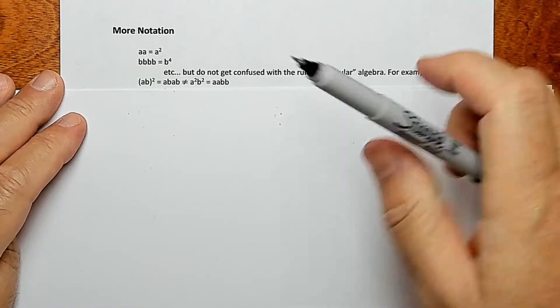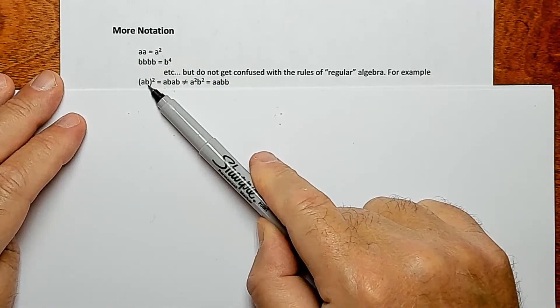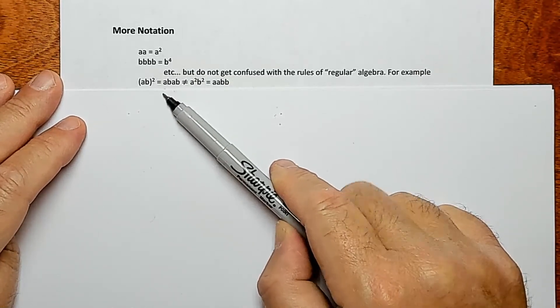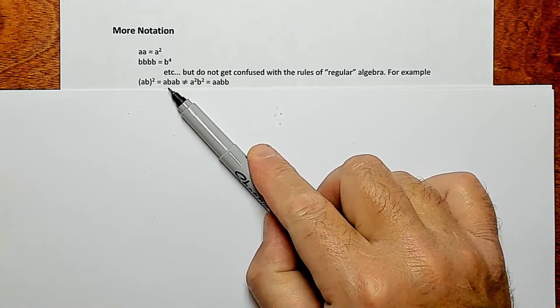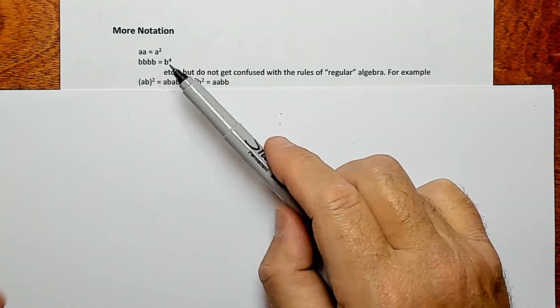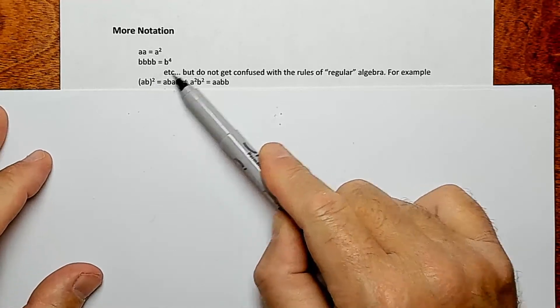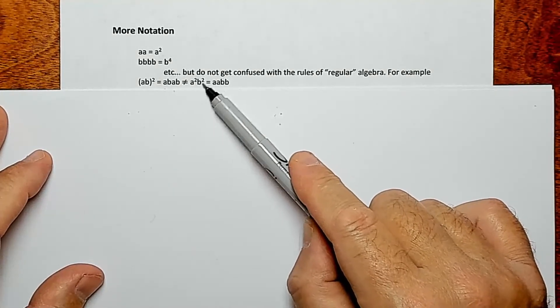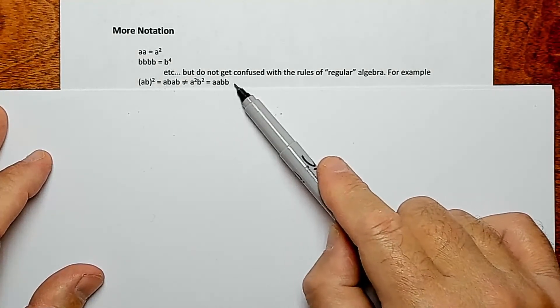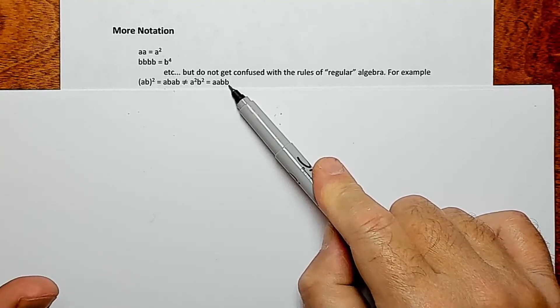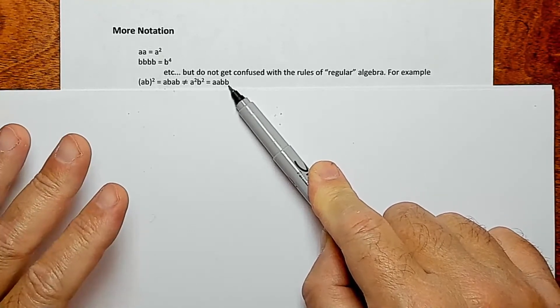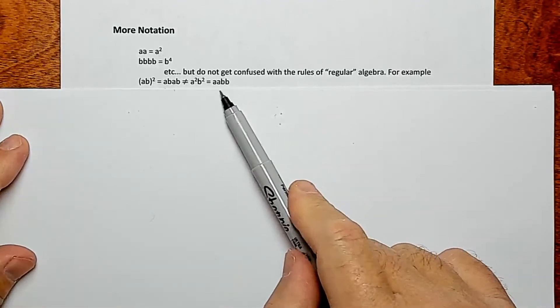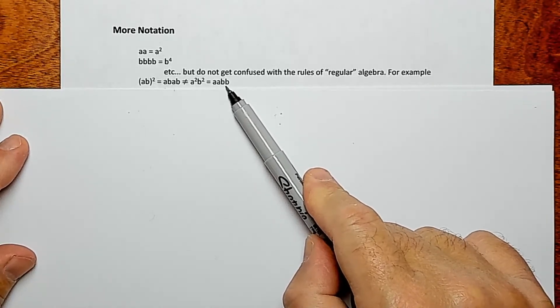But careful because when you do (AB)^2, what that really means is ABAB. But you've got to be careful because in regular algebra, you can factor in the two, right? And get this A^2 B^2. But that's not the same thing in this notation. The A^2 B^2 means two A's and two B's, which if you were multiplying, that'd be fine because multiplication is commutative, right? You can do it in any order. But we're not doing multiplication here. So be careful there, right? The order matters.